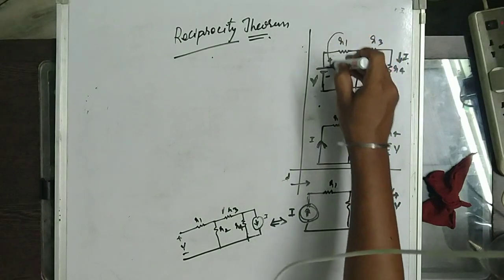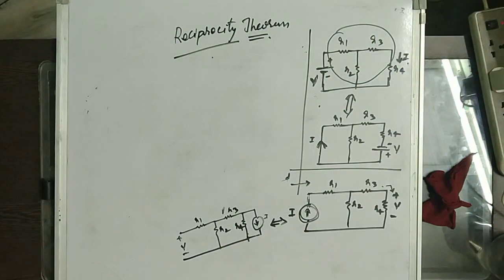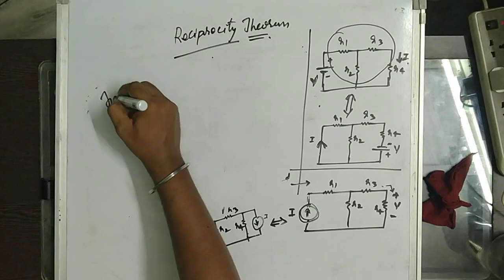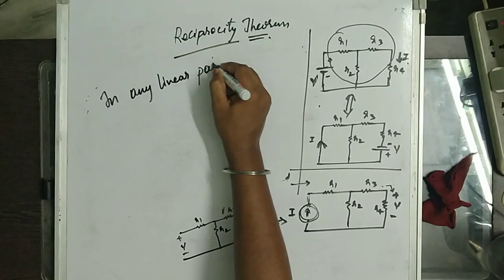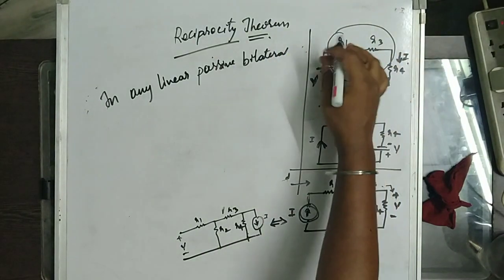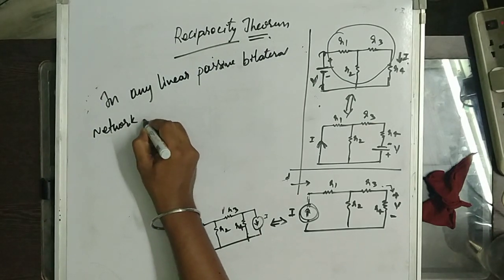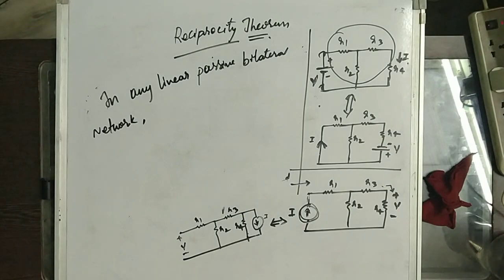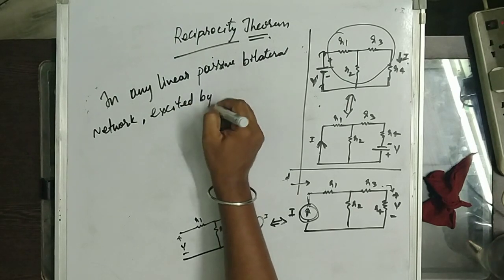Linear means this is a linear circuit because we are having only resistors and no non-linear elements. Non-linear elements are diodes, transistors — those are all non-linear elements. Passive bilateral network — bilateral means two terminals. So this is the bilateral network. This network should be excited by a single source.